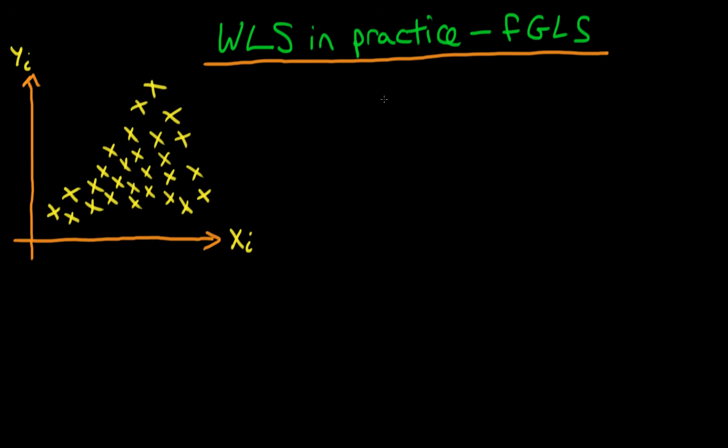In this video I want to talk about how we actually go about estimating weighted least squares models in practice. The name that this goes by in the literature is feasible generalized least squares, and the 'feasible' means that we can actually feasibly do this.